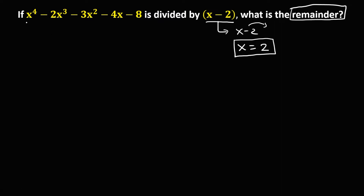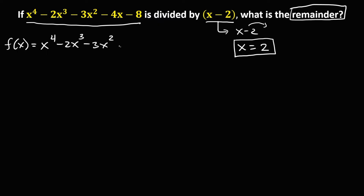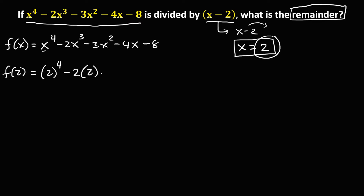To find the remainder from this equation, we have f of x equals x to the power 4 minus 2x to the power 3 minus 3x squared minus 4x minus 8. Since x is equal to positive 2, this becomes f of 2. Substituting 2 for x: 2 to the power 4 minus 2 times 2 to the power 3 minus 3 times 2 to the power 2 minus 4 times 2 minus 8.